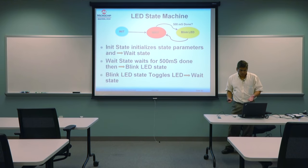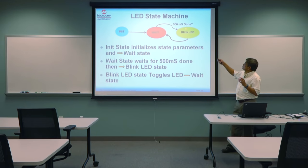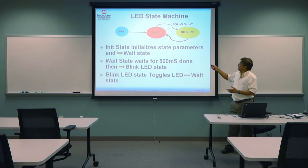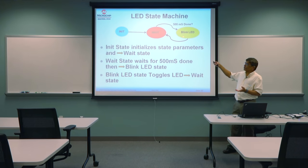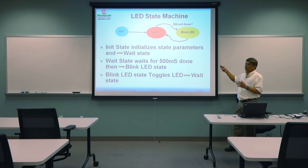For the blinking LED state machine: init takes us to a wait state, where we check for the 500 millisecond flag. When it's done, we go to the blink LED state — if on, turn off; if off, turn on — then go back to wait. There are only three states: init, wait, and blink. It's a very simple yet important state machine structure.